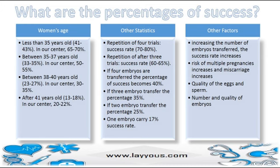Success rates by age: under 35 years old, the general rate is 41–43%, and in our center, 65–70%. Between 35–37 years old, the general rate is 33–35%, and in our center, 50–55%. Between 38–40 years old, the general rate is 23–27%, and in our center, 30–35%. After 41 years old, the general rate is 13–18%, and in our center, 20–22%.